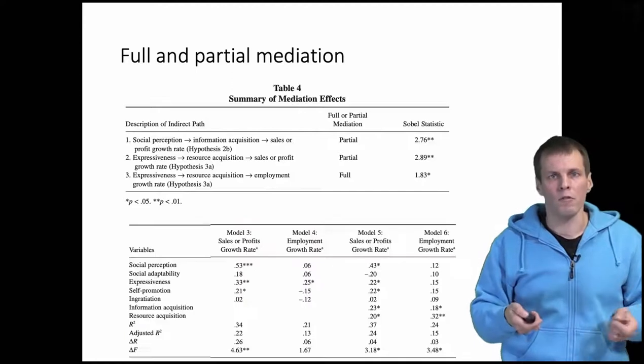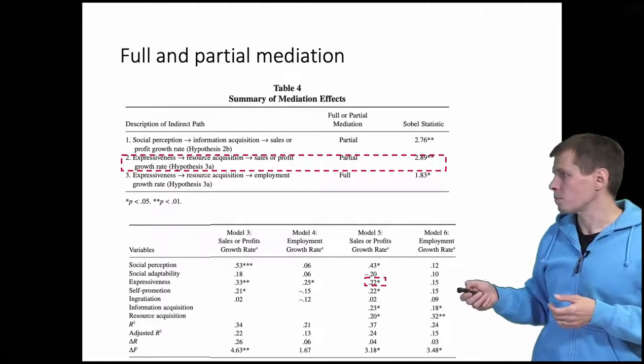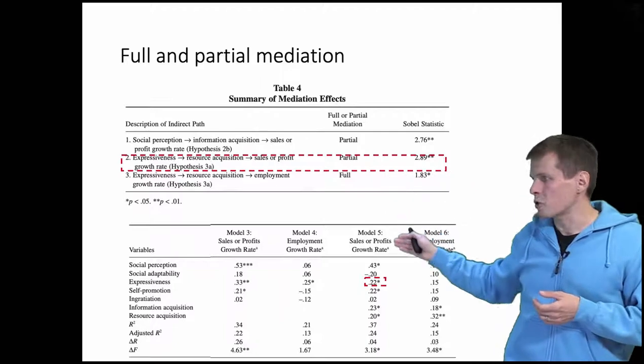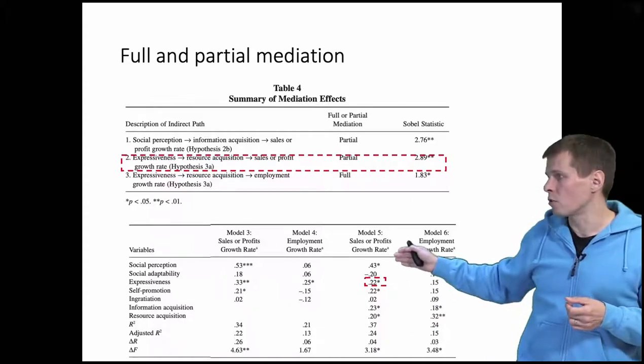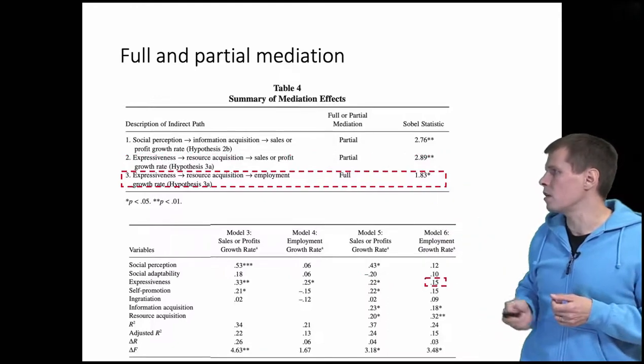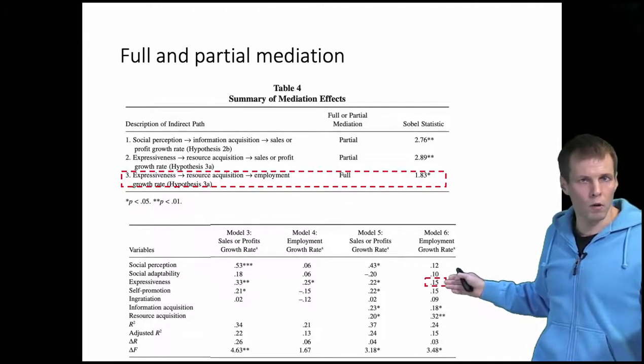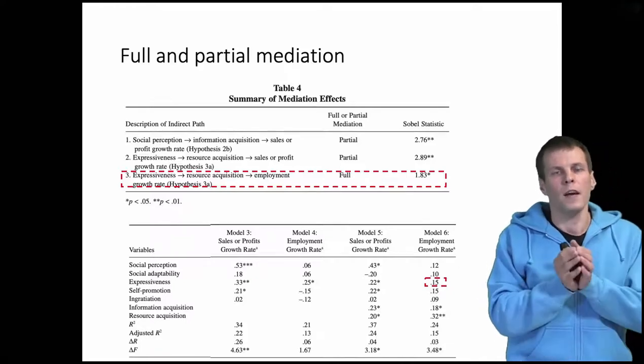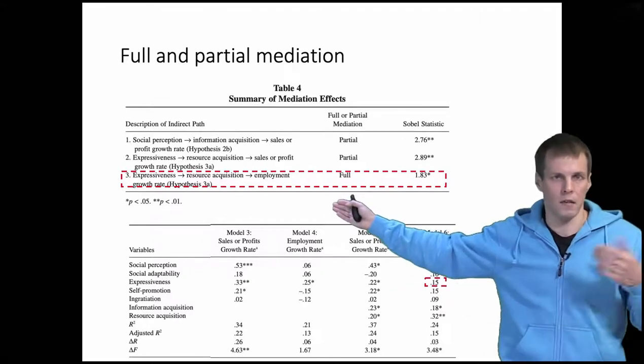If we look at the actual regression results, we can see the full mediation and partial mediation evidence here. So this is partial mediation—we can see that the effect of expressiveness persists in model five, which contains the original variables and the mediator. I have left out the controls just to simplify the table a bit. And then when we look at this full mediation here, we can see that the effect of expressiveness is non-significant on employment growth rate after we control for the mediator. So if we hold the mediator constant, then increasing expressiveness does not make a difference.